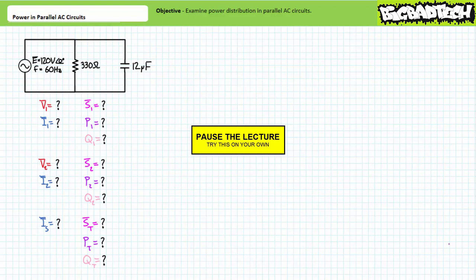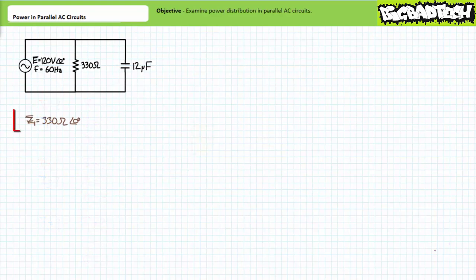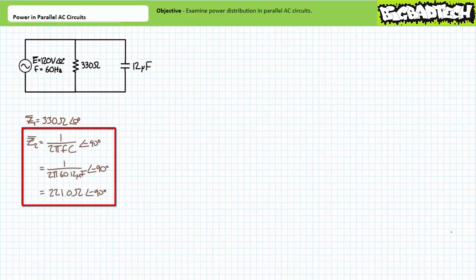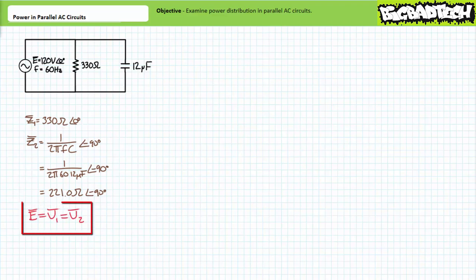If you're tracking, you should have obtained the following results. The complex impedance of the 330 ohm resistor is 330 ohms at an angle of zero degrees — let's call this impedance Z1. The complex impedance of the 12 microfarad capacitor at 60 hertz is roughly 221 ohms at an angle of negative 90 degrees — let's call this impedance Z2. Voltage across elements in parallel is the same; this is the most fundamental property of parallel circuits. It can be said that supply voltage equals V1, which equals V2.